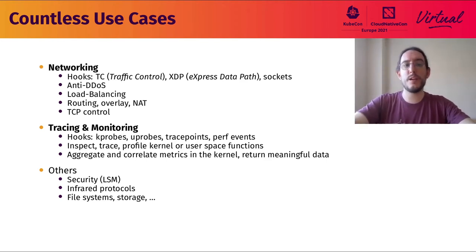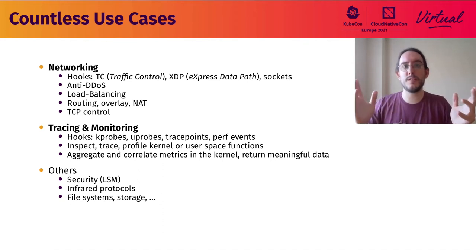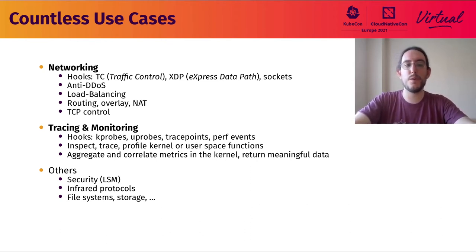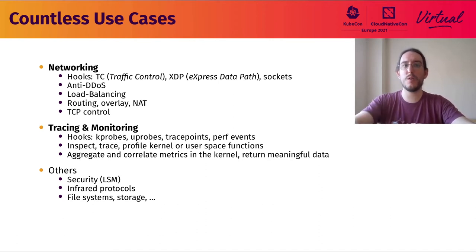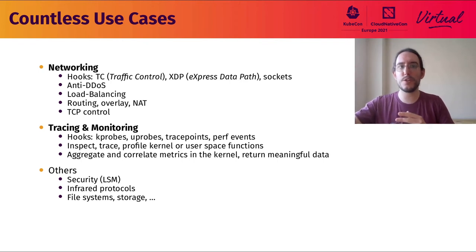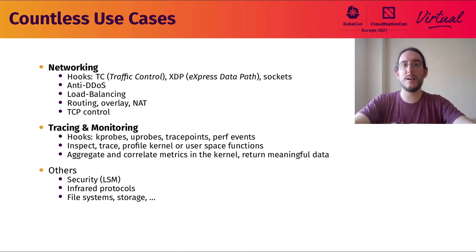For tracing and monitoring, you have hooks on kernel probes and user probes — dynamic probes that don't need any instrumentation inside your programs. You also have static probes with tracepoints or their user-space equivalents. You can use them to inspect, trace, and profile your kernel or user-space applications, helping you understand resource usage and optimize your programs. A big advantage is that because eBPF runs in the kernel, you can aggregate and correlate metrics inside the program and only send meaningful information to your user application, saving a lot of overhead.